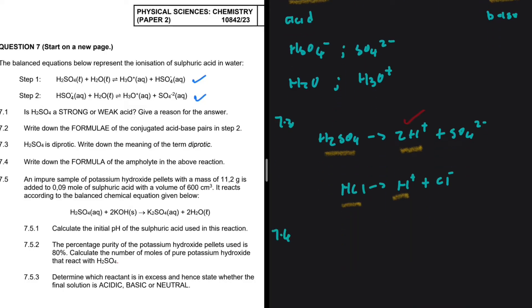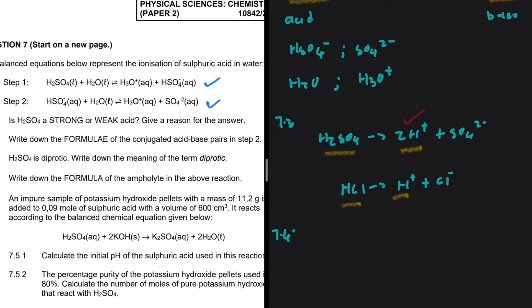Let's take a look at 7.4. Write down the formula of the ampholyte in the above reaction. So an ampholyte, an amphiprotic species, is a substance that can act as both an acid and as a base. So take a look at step 1. We have H2SO4, which is our acid, and the conjugate base is HSO4 minus. So in step 1, HSO4 minus acts as a base.